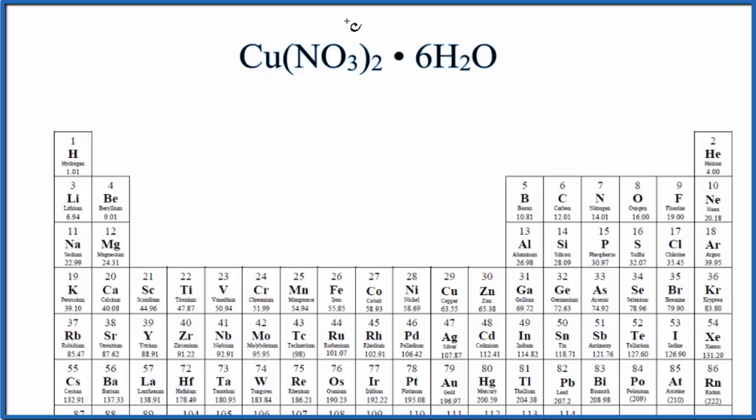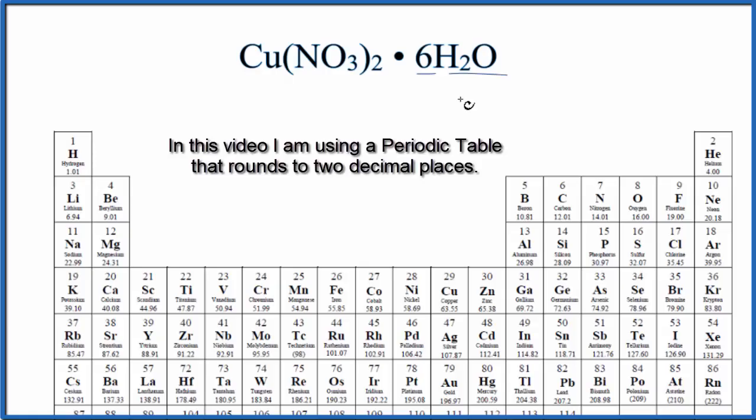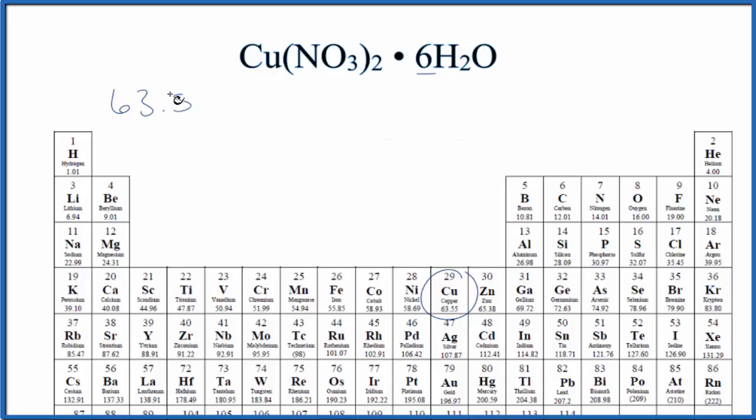So to do this, we'll find the molar mass of the copper 2 nitrate, and then we'll add the six water molecules to that. For copper on the periodic table, it's 63.55, and the units are grams per mole. I won't write those until the end.